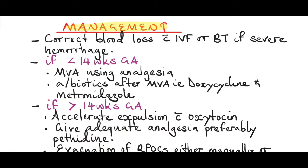All products of conception can be felt on examination. Management of an inevitable miscarriage: remember that this patient will have the miscarriage whether we like it or not. What you can do for the patient is supportive management as well as active management. If the patient has lost a lot of blood, you give a blood transfusion; if they haven't, you correct the blood loss with intravenous fluids.